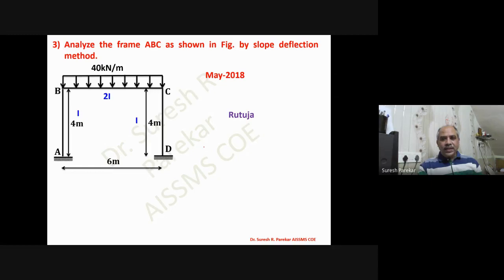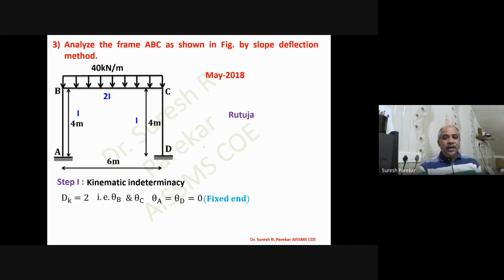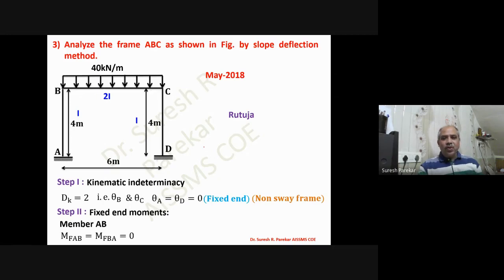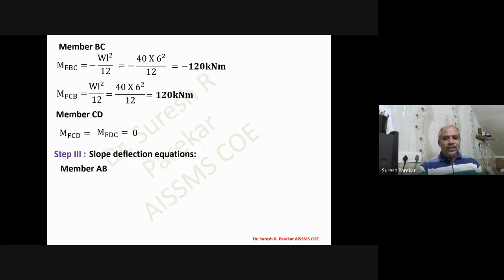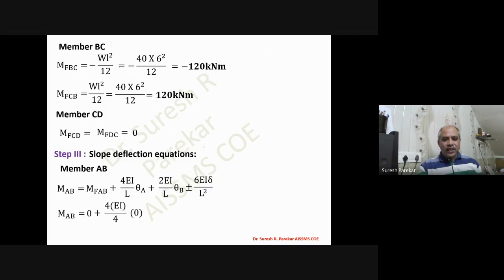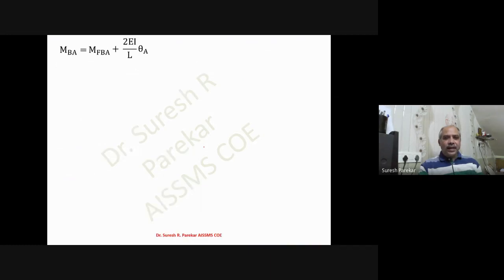The next problem is from May 2018. The frame is symmetrical about the center in all respects, so it is treated as a non-sway frame with two unknowns: theta_B and theta_C. Delta = 0. Members AB and CD have no load so their fixed end moments are zero; fixed end moments exist only for BC and CB.